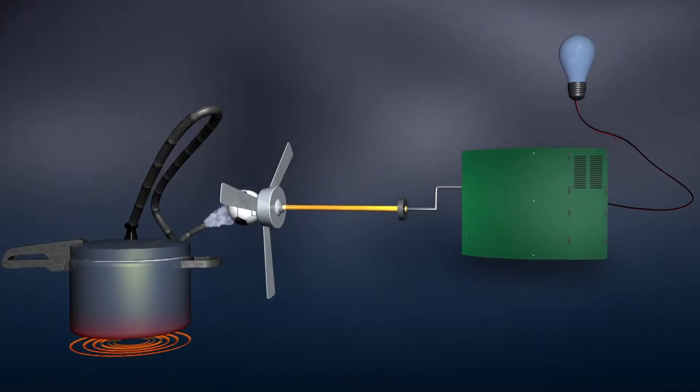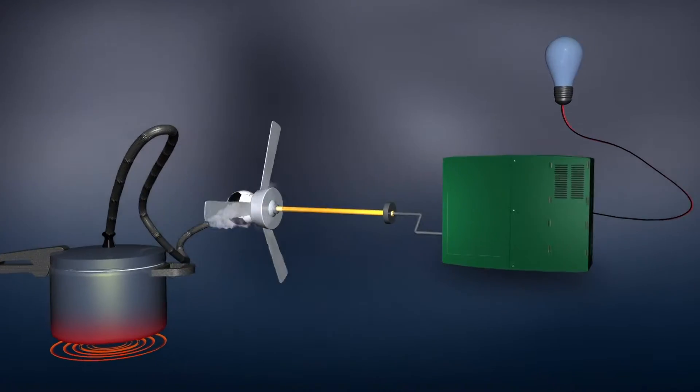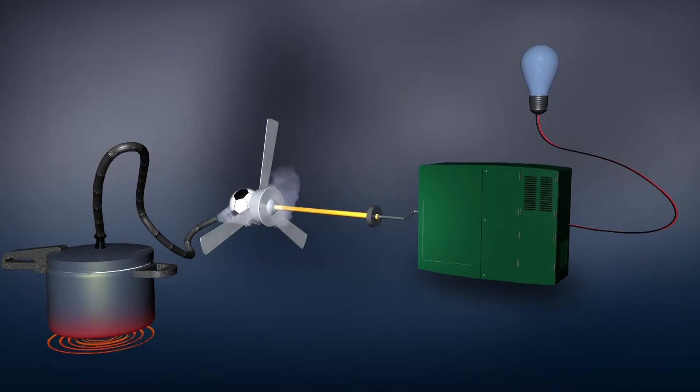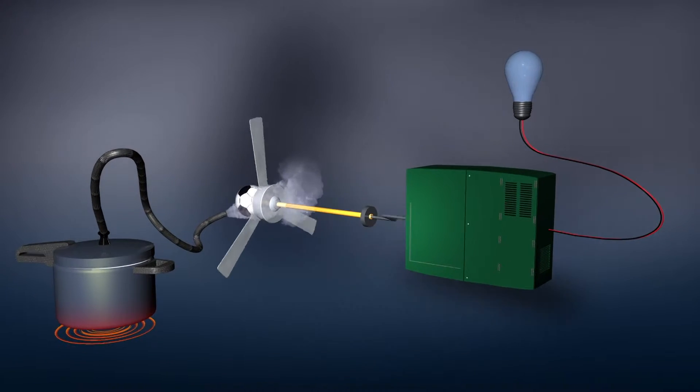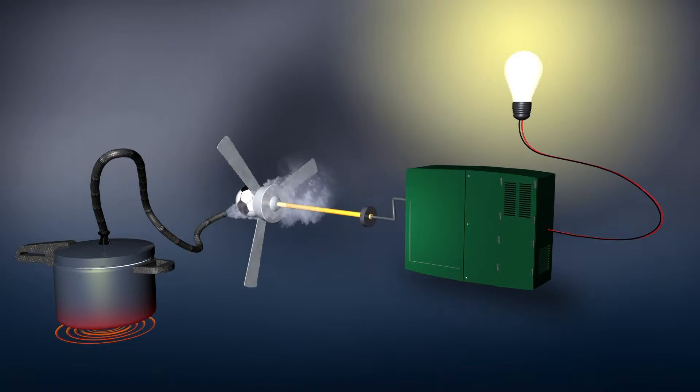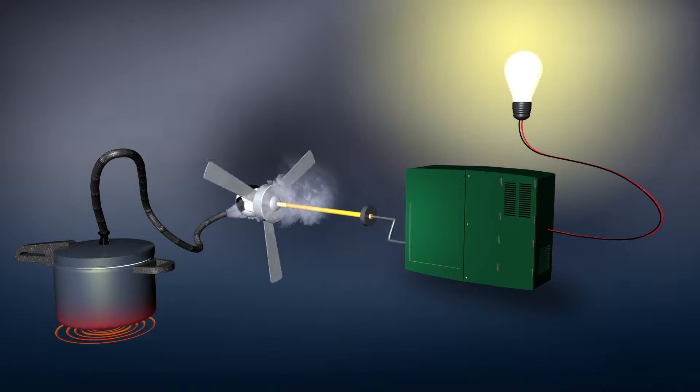It's important to know that not only can heat move from one object to another, it can also be transformed into other forms of energy. Thermal energy is often used to generate steam, which in turn can be directed to mechanically turn the blades of a turbine. This mechanical energy is then used to generate electricity.